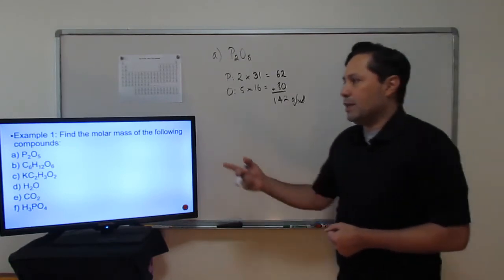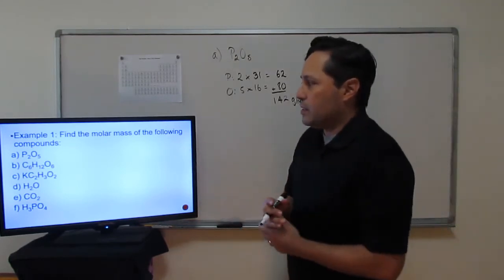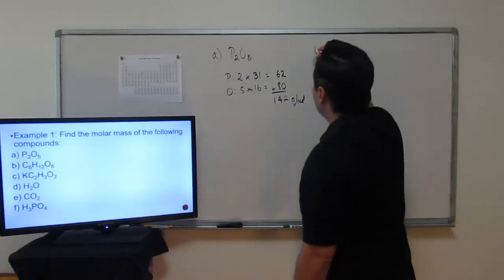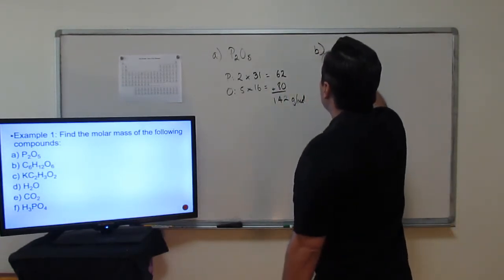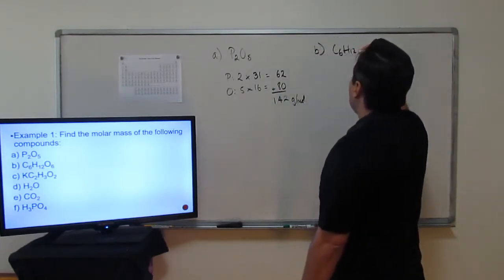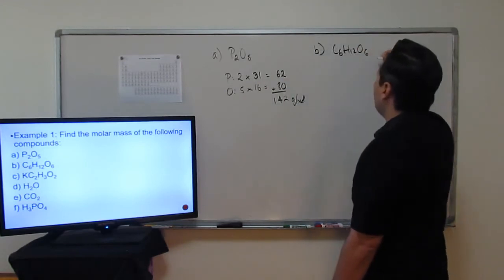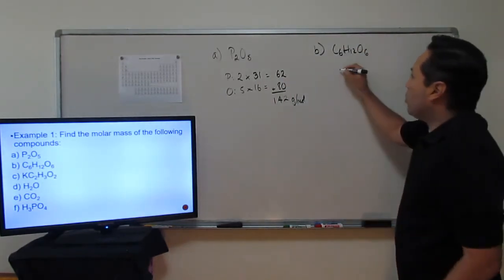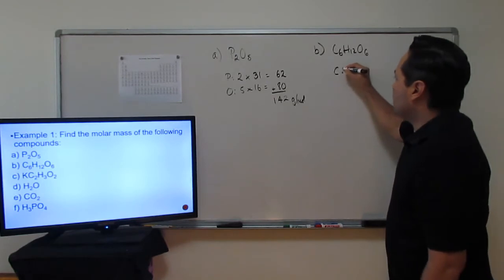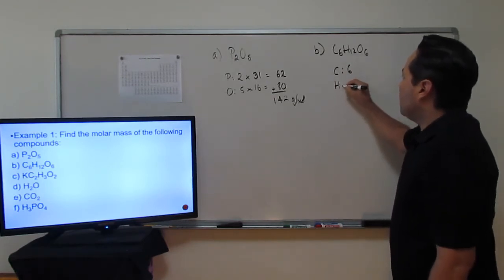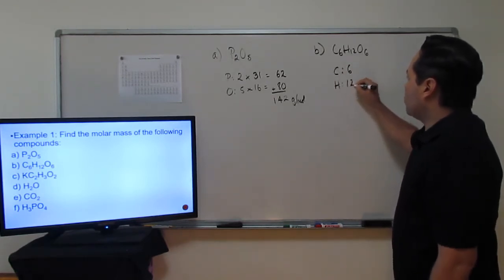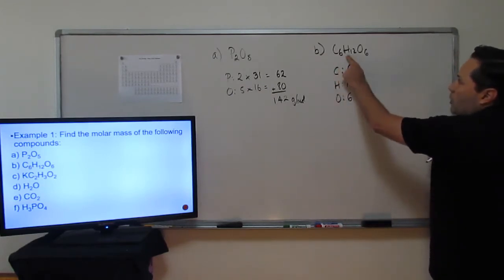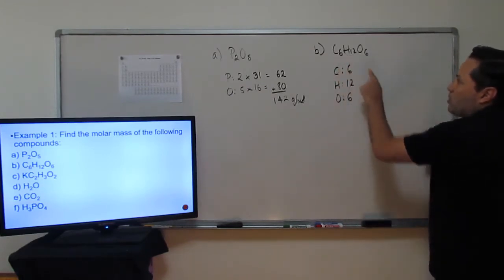For our next compound, letter B: C₆H₁₂O₆ — that is glucose. Again, you count how many atoms you have: six carbons, 12 hydrogens, and six oxygens.